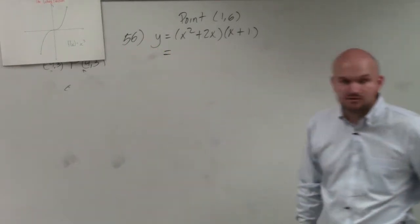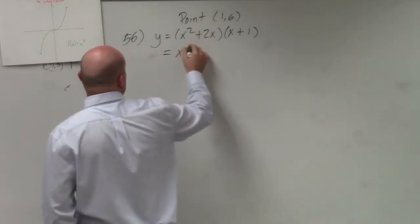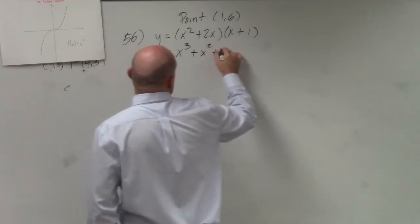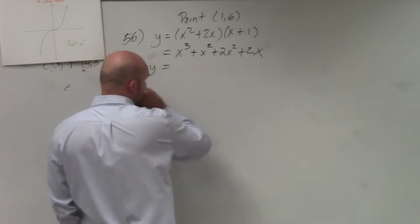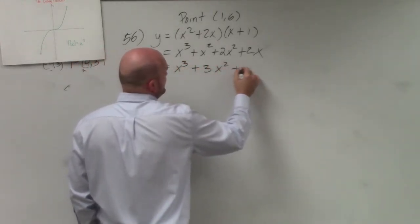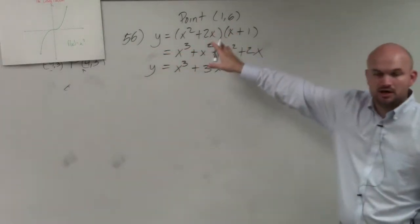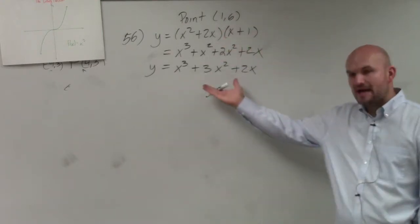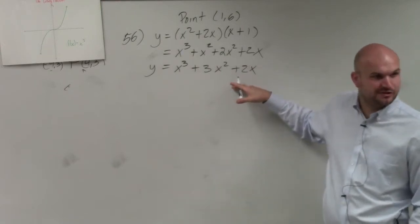You guys should be able to multiply this out with really not much ease just by doing a FOIL. You get x³ + x² + 2x² + 2x. y = x³ + 3x² + 2x. And again, the problem is write the tangent line tangent to our equation going through the point (1, 6). So now I have my equation line, now it's simplified. Now it's really easy to use the power rule, right?